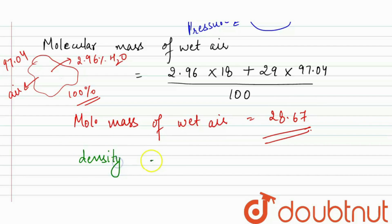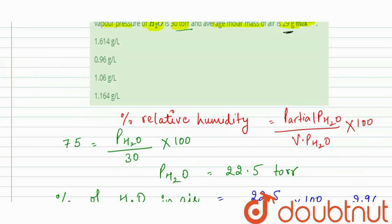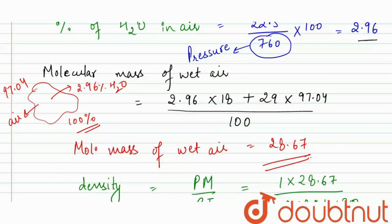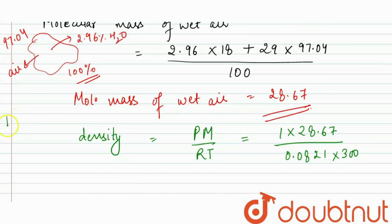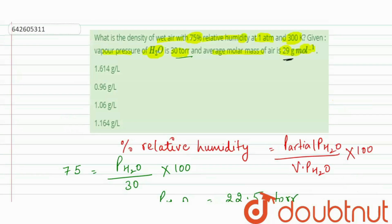Now we calculate the density using the formula: density = PM / RT. Here, P = 1 atm, M = 28.67 g/mol, R = 0.0821 L·atm/mol·K, and T = 300 K. This equation comes from the ideal gas law PV = nRT, rearranged to give density = PM / RT. The density works out to 1.164 grams per liter.